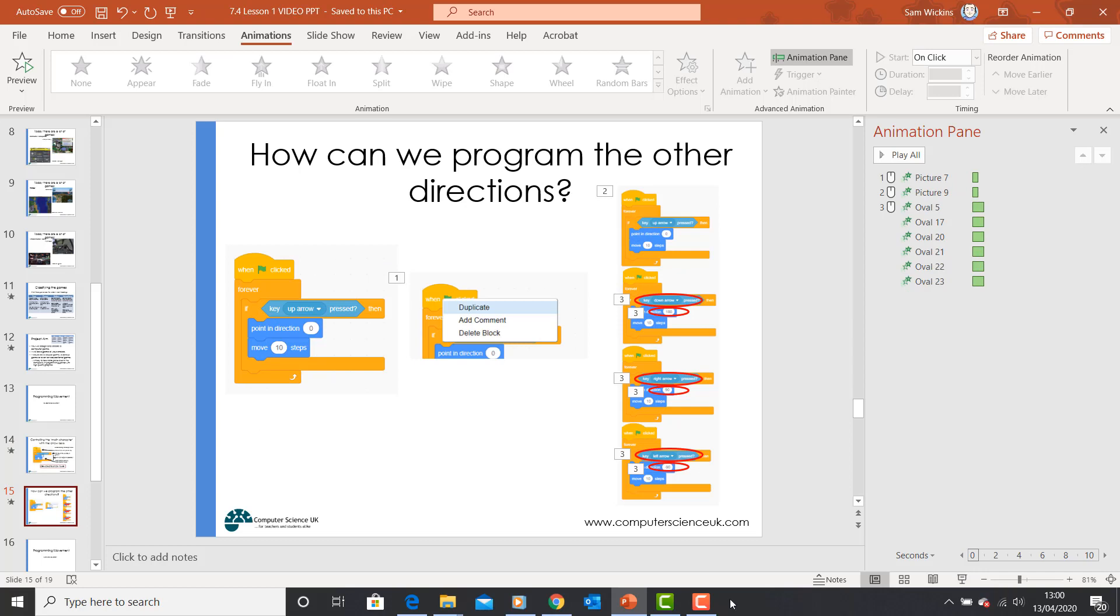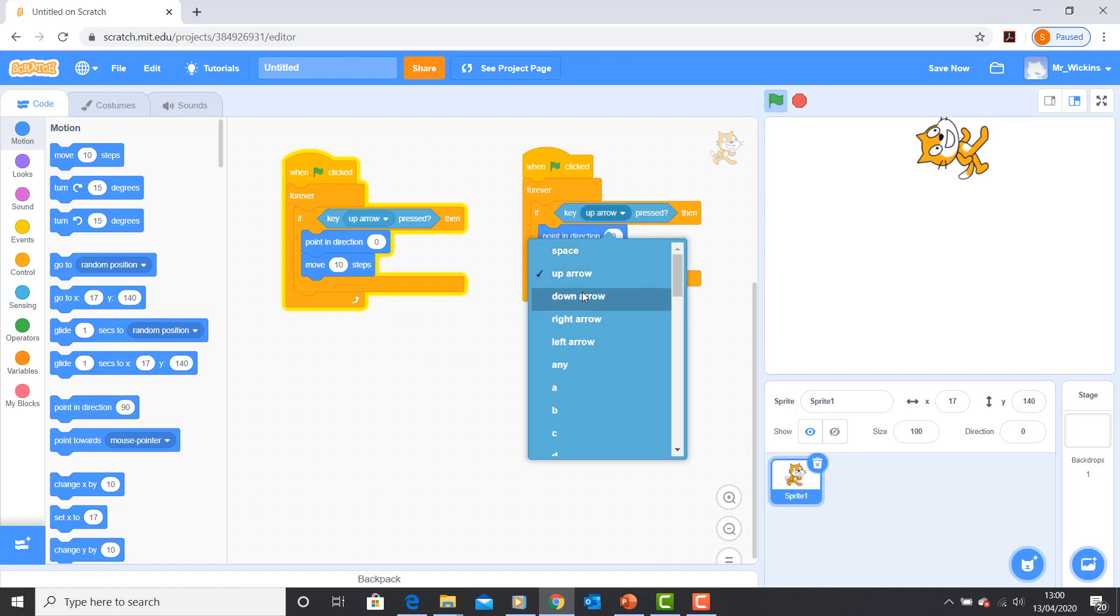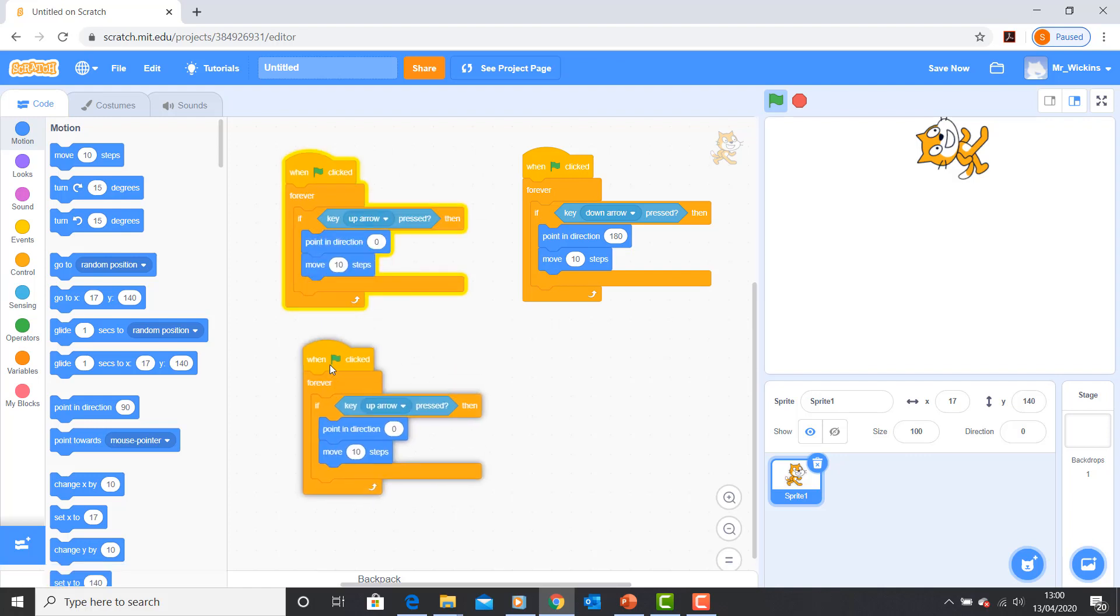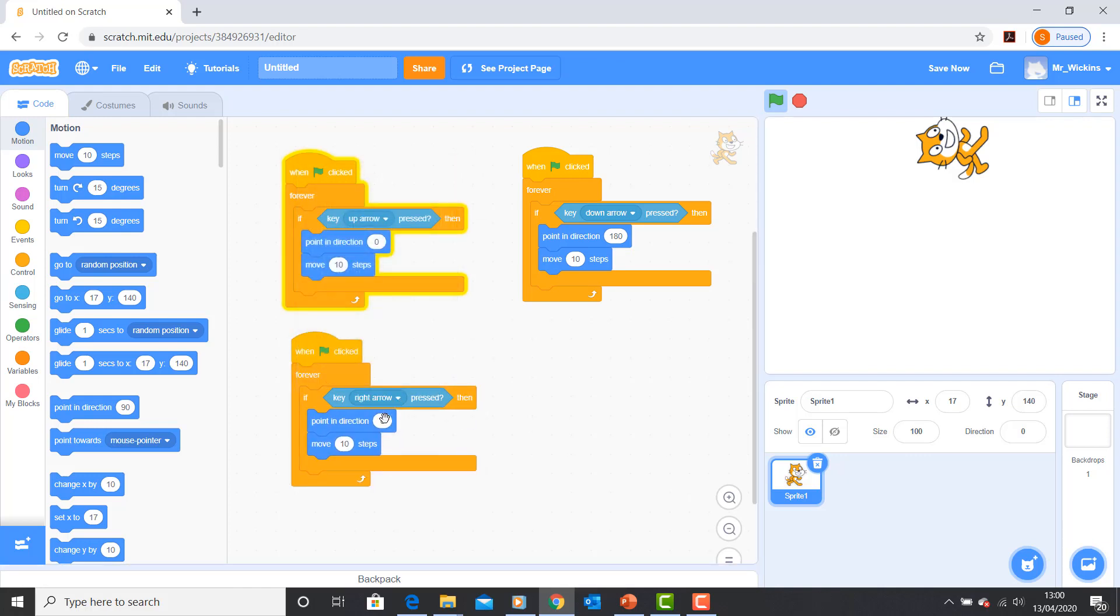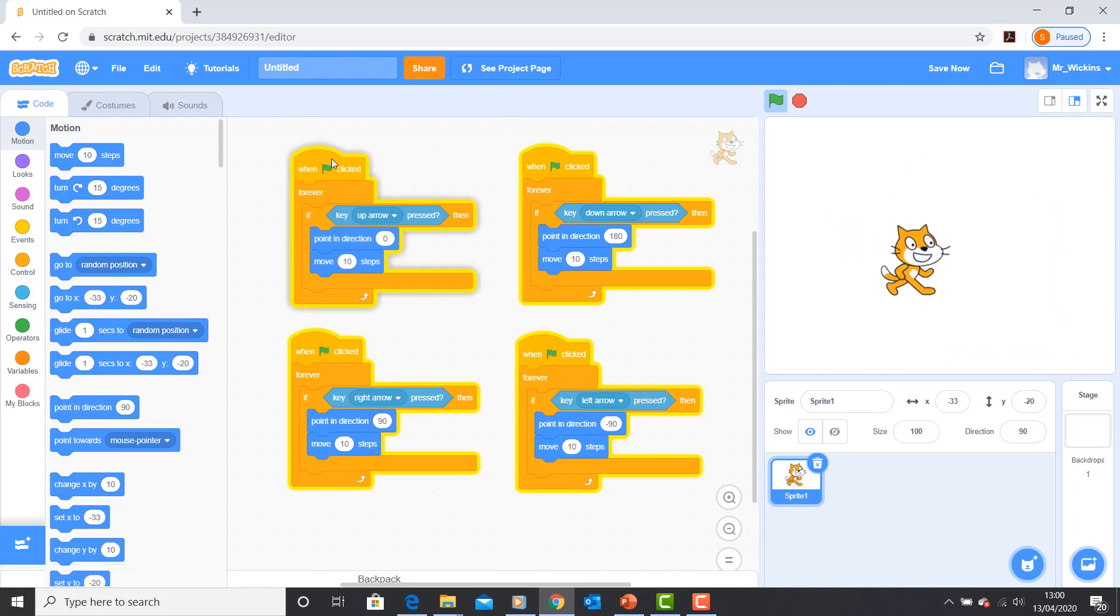Let me demonstrate how that works. I'll right-click, duplicate, and when the down arrow key is pressed, make the cat point downwards and move ten steps. Let's duplicate again—when the right arrow key is pressed, we'll point to the right. When the left arrow key is pressed, we'll make the cat point to the left. Now I've got full movement all the way around, which is perfect. I've managed to program movement using these four scripts.